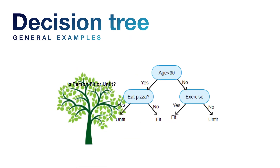Another example: if a person's age is less than 30, they can eat pizza. If no, they should exercise. If they eat pizza, we check if they are fit or unfit — if fit, they can eat it; if unfit, they should not. We can determine whether a person is fit or unfit by looking at this decision matrix.